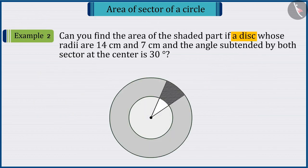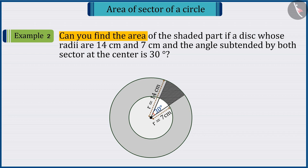There is a disc whose radii are 14 centimetres and 7 centimetres, and the angle subtended by both sectors at the centre is 30 degrees. So, can you find the area of the shaded part of the circle? Come, let's see.